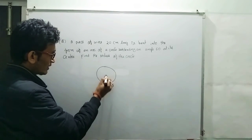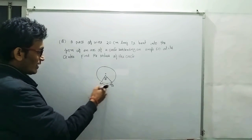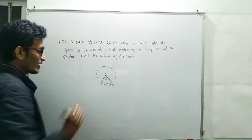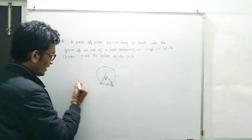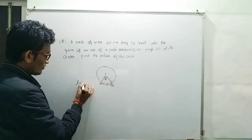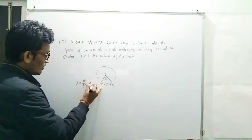theta at the center, and what is the length of the arc? L is the length of the arc. This arc AB subtends an angle theta at the center, then L equals theta by 360 degree into 2 pi r. So this is the formula